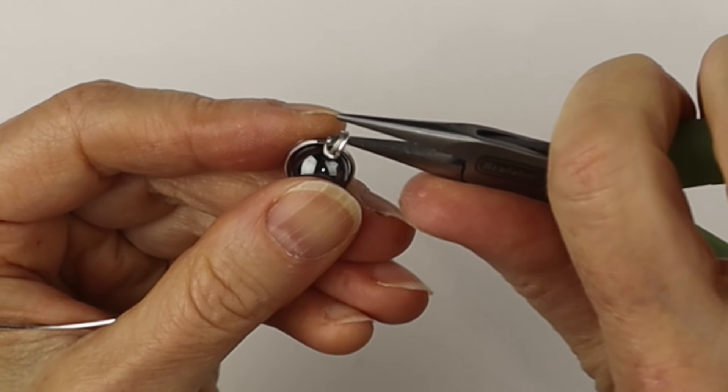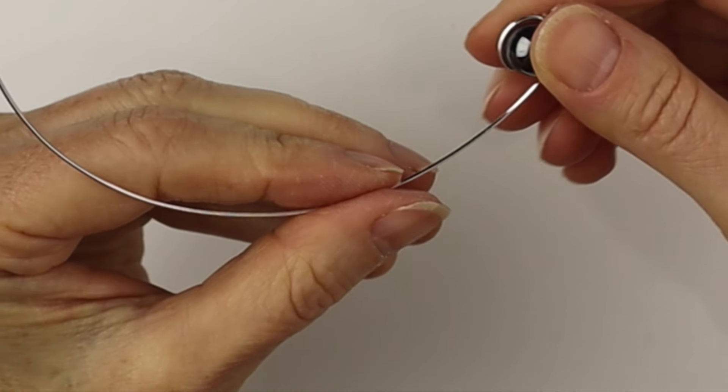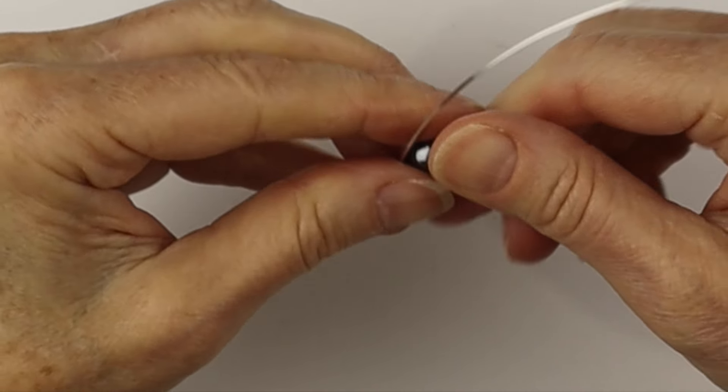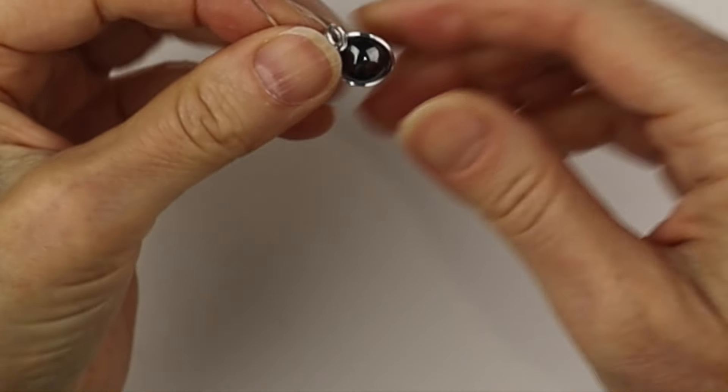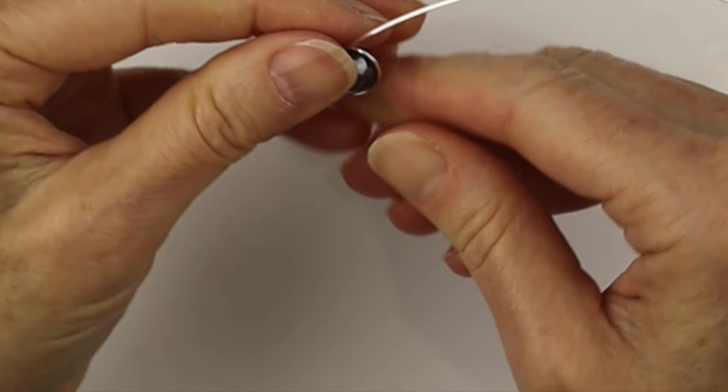Now we're going to bring the other wire around to the front of the bead. So holding it firmly with your thumb and finger, bring the wire around to the front, just check that it's in the good position.